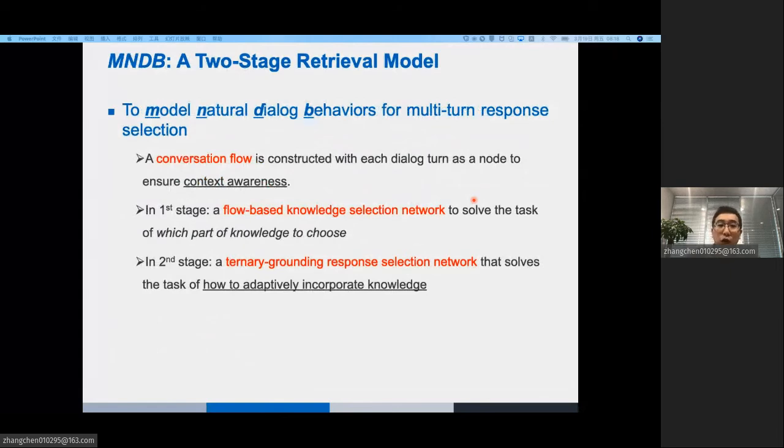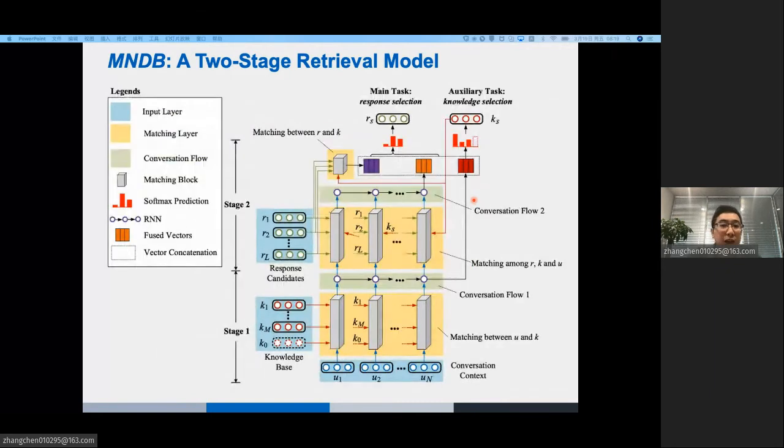To achieve AKGC, we propose a two-stage retrieval model called MNDB to model natural dialogue behaviors for multi-turn response selection. To model the multi-turn information, MNDB constructs a conversation flow with each dialogue turn as a node. Based on that, in the first stage, we propose a flow-based network to solve the task of which part of knowledge to choose. Then, in the second stage, we propose a ternary grounding network that solves the task of how to adaptively incorporate knowledge.